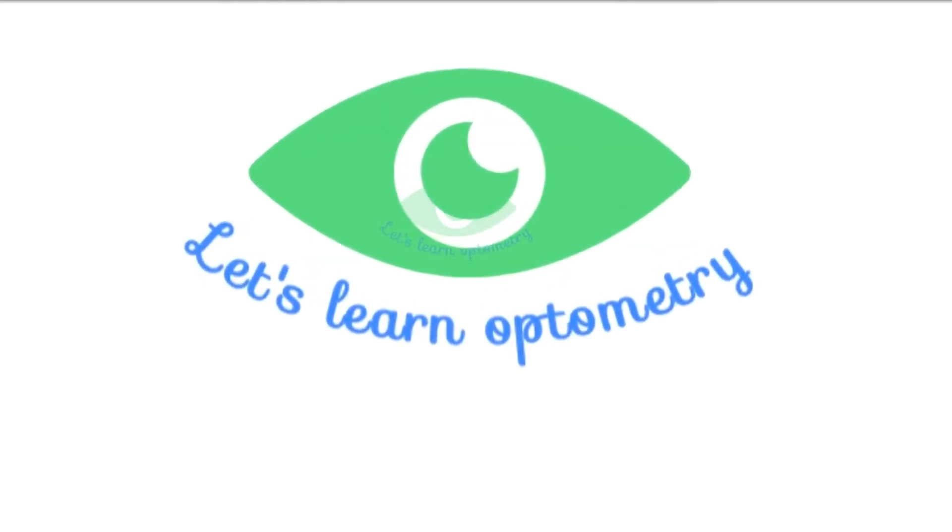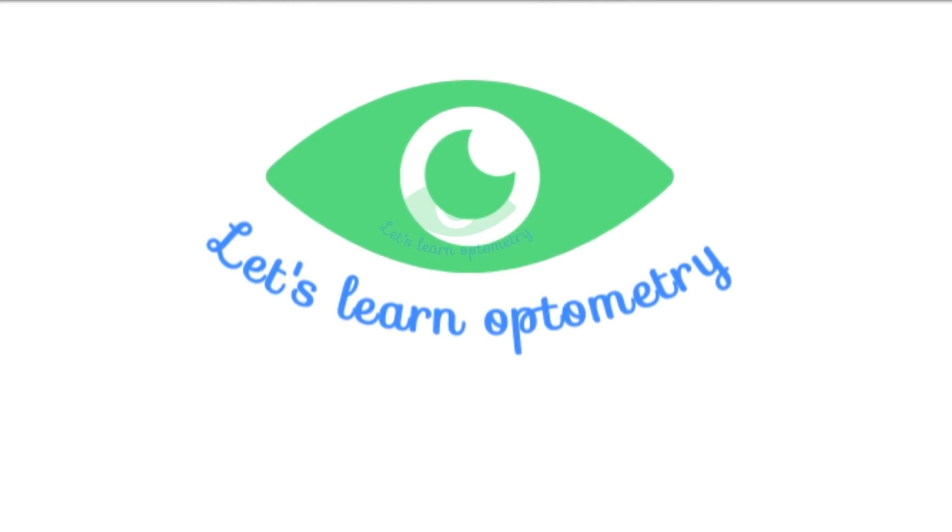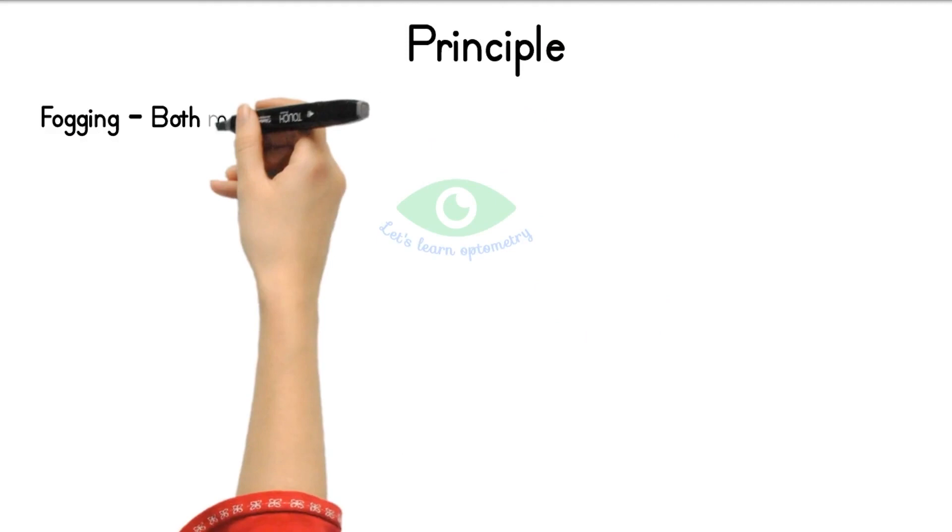Hello all, welcome to Let's Learn Optometry. In this video we will see the principle of Jackson cross cylinder. Also, please watch our previous videos on basics of JCC and procedure of JCC. In the fogging method, while adding plus lenses, the focal lines move in the same direction.